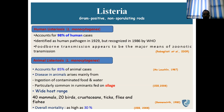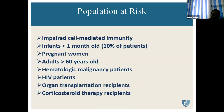Listeria monocytogenes has a wide host range — 40 mammals, 20 birds, crustaceans, ticks, flies, and fishes. Overall mortality can range as high as 30%, as per OIE 2008 data. Populations most at risk are those with impaired cell-mediated immunity: infants less than one month old, pregnant women, adults greater than 60 years old, those with hematological malignancies, HIV patients, organ transplant recipients, and patients on corticosteroid therapy — which depresses immunity.